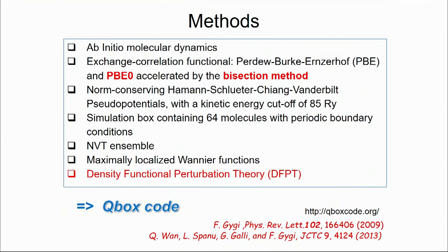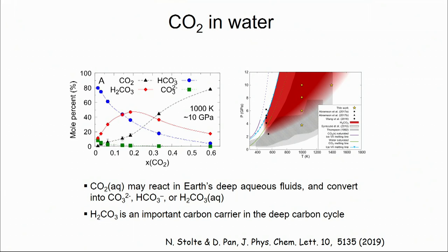The simulation is called ab initio, or first-principles, molecular dynamics. The advantage of this method is that it does not rely on empirical parameters or experimental inputs, so it's very good at predicting. Basically, we combine molecular dynamics simulations with quantum mechanics calculations on the fly.